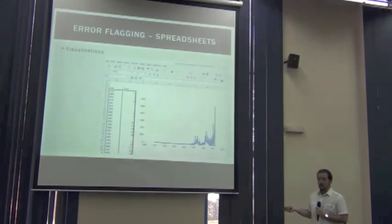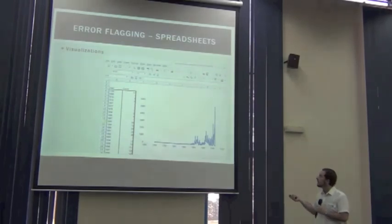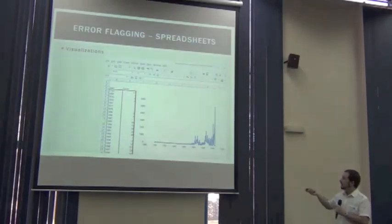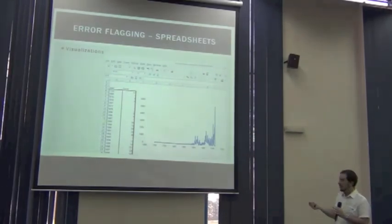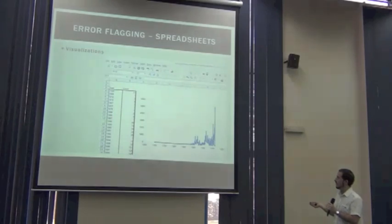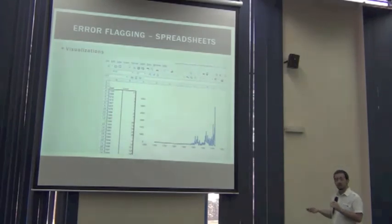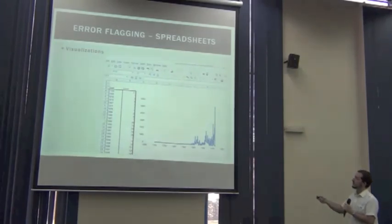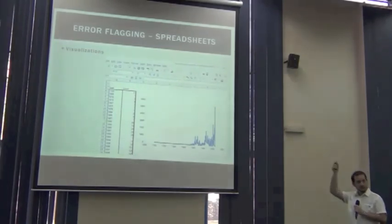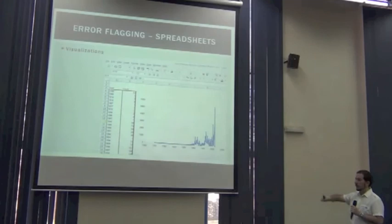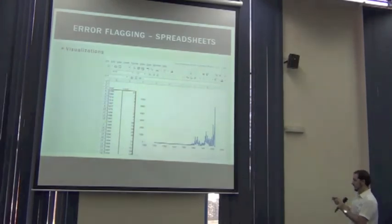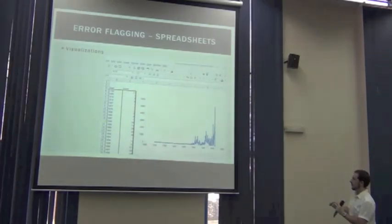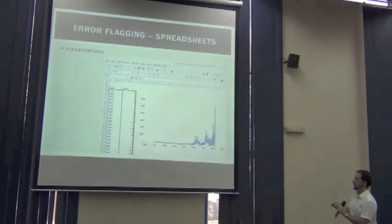We can also plot the records to see them visually and detect issues. For example, by taking the year column and plotting it, we can see that the minimum year is 70, which is very suspicious.